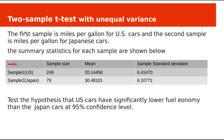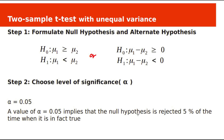For the second example — also seen in the previous test — we have a summary of two samples, and we need to test whether US cars have lower fuel economy than Japanese cars based on the sample data at 95% confidence level. The null hypothesis H0 is mu1 greater than or equal to mu2, and the alternate hypothesis H1 is mu1 less than mu2.